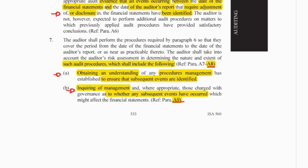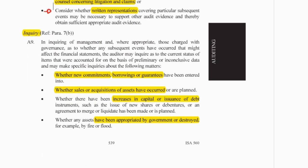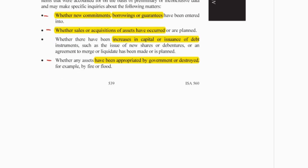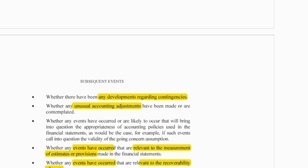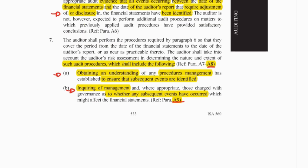We need to obtain an understanding of what to inquire of management. A9 says we need to ask them specific questions: whether there were new commitments, borrowings, or acquisitions of assets post year end; assets destroyed or appropriated by government; any developments regarding contingencies; unusual accounting adjustments; and events that have occurred with regards to the recoverability of assets.